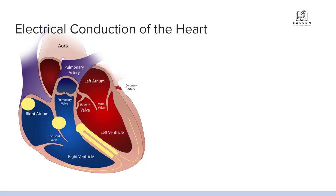First off, this is just the basic heart. We've got the atria up here and then the ventricles down here on the bottom, and then your right side and left side. Remember that we always look at things in the anatomical view. So while we're looking at the screen and this is our left side, it's actually the right side of the patient and vice versa.